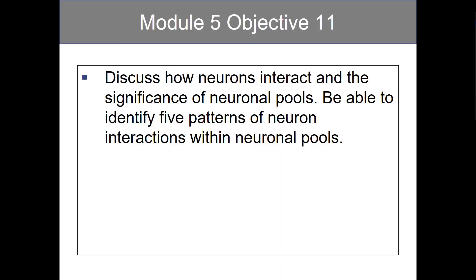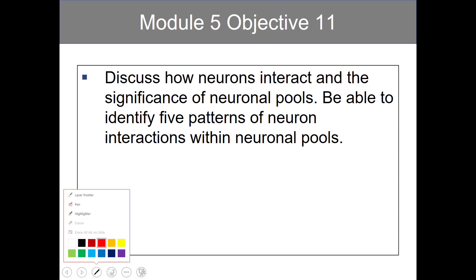Module 5, Objective 11: discuss how neurons interact and the significance of neuronal pools, and be able to identify five patterns of neuron interactions within these neuron pools.